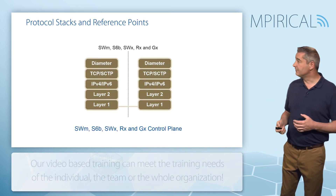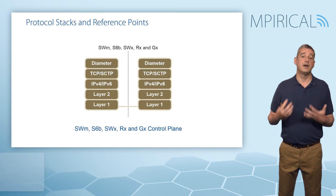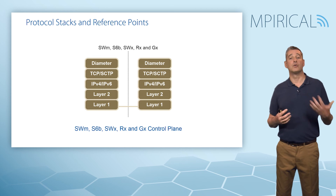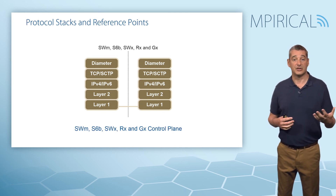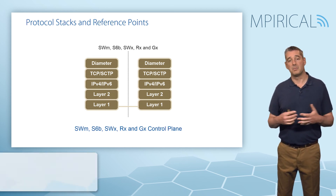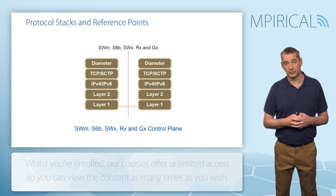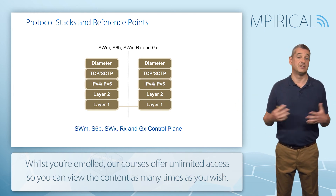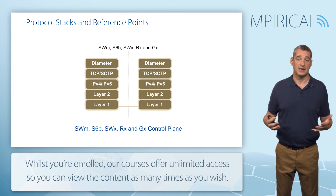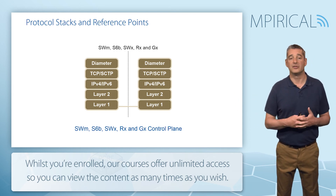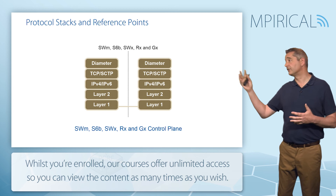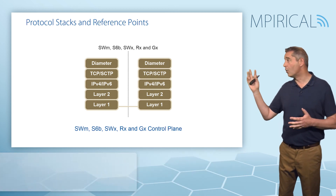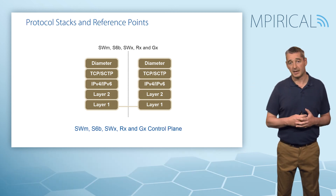That leaves the various protocols operating out towards the AAA server, the HSS, and our policy charging rules function. These will utilise the services of Diameter, which will sit on either TCP, our transmission control protocol, or SCTP.